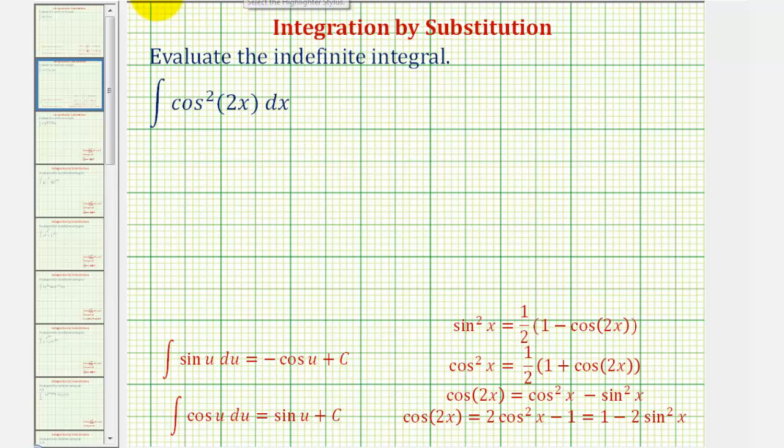But we can perform a substitution using a power-reducing formula, given here below in red. Notice that cosine squared x is equal to one-half times the quantity one plus cosine 2x.